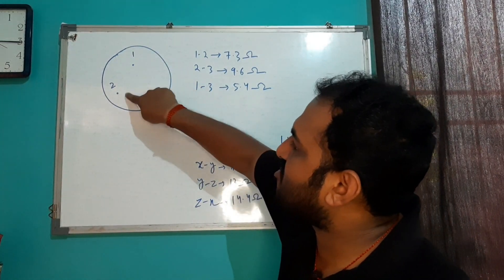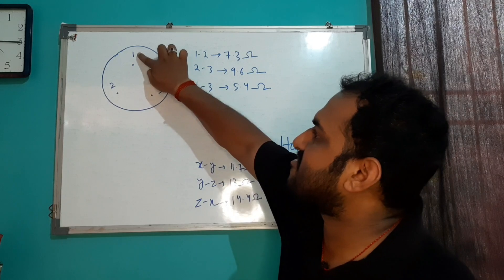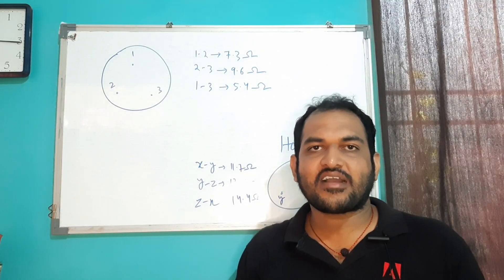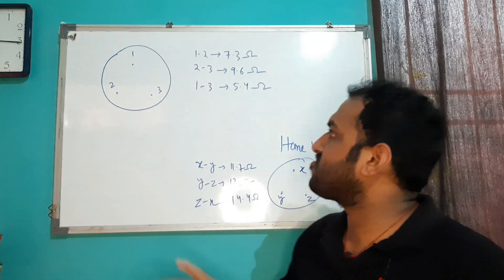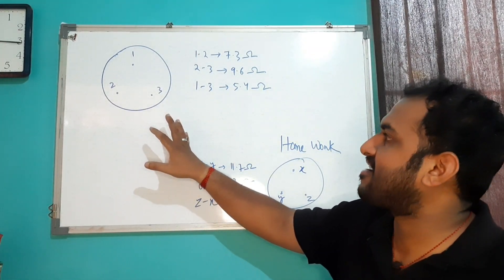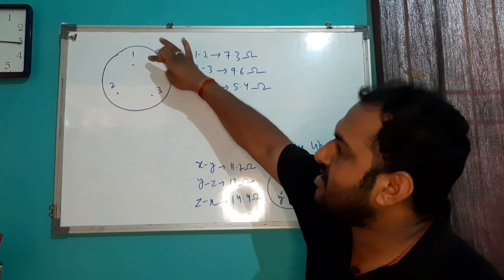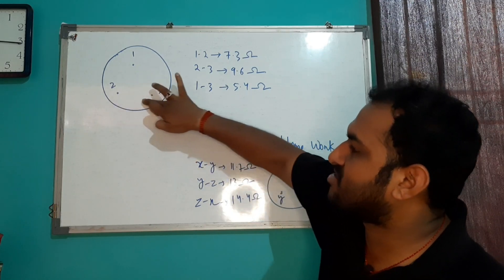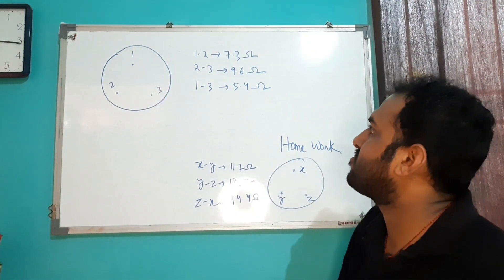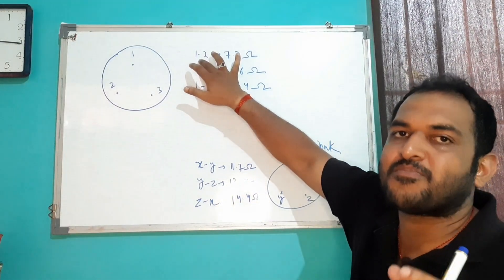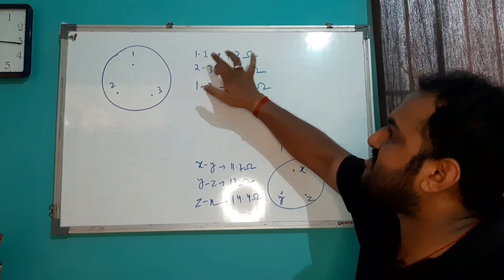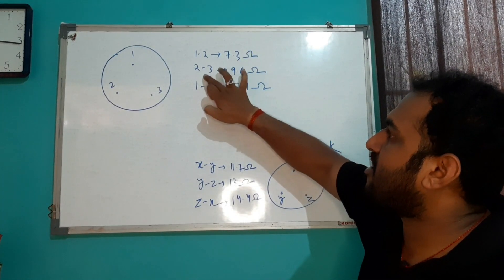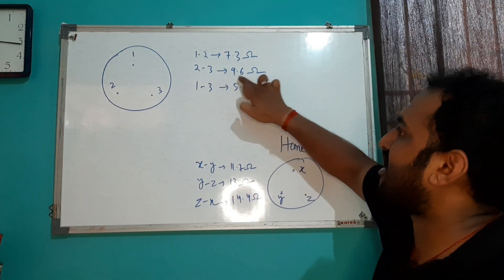Suppose this compressor has 3 terminals. I will name them terminal one, terminal two, and terminal three. First, we need a multimeter. We have to measure resistance across terminals one and two, then across terminals one and three, and similarly across terminals two and three. The resistance across two and three terminals is 9.6 ohms.